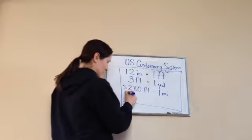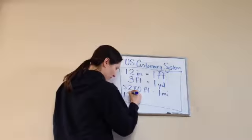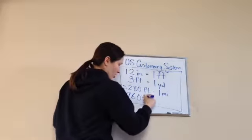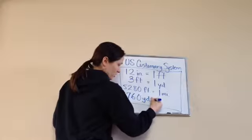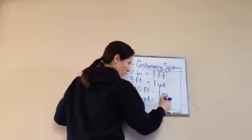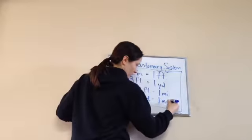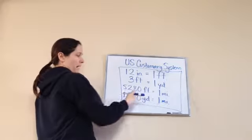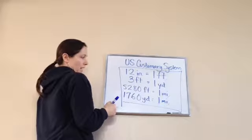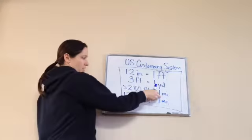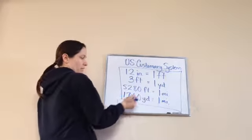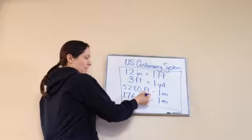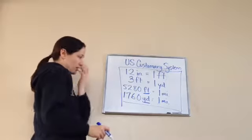And then the last one is 1,760 yards equals one mile. So these are both in forms of miles. This one equals a mile using feet, and this one equals a mile using yards.